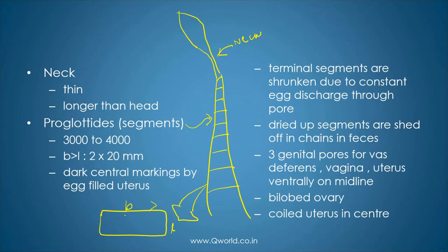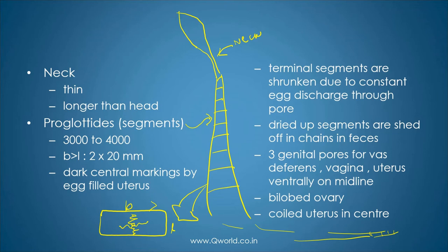Each segment has a dark central marking which is of the uterus, filled with eggs. The terminal segments, the ones at the last, are a little bit shrunken and some of them are dried up, and they are secreted in human feces. There are three genital pores: one for vas deferens, one for vagina, and one for uterus, and they all open in the midline of the segment. It has a bi-lobed ovary as well as a coiled uterus in the center.